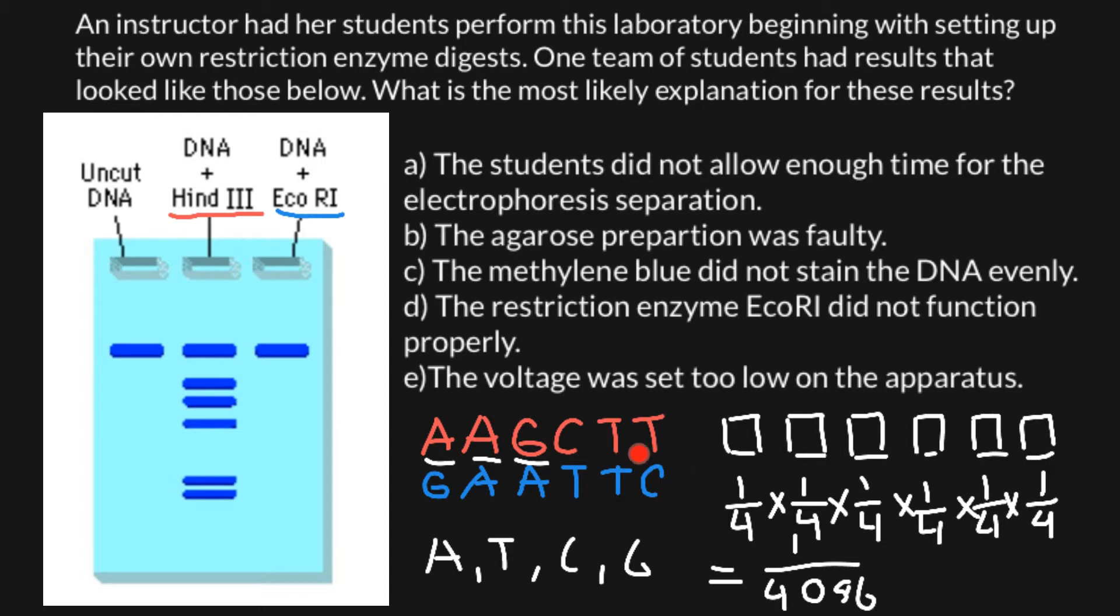And the same is true for the second sequence, because this sequence has the same length, six nucleotide bases. So EcoR1 enzyme would cut the same DNA about as many times as it's going to be cut by Hind3 enzyme - about every 4096 bases.